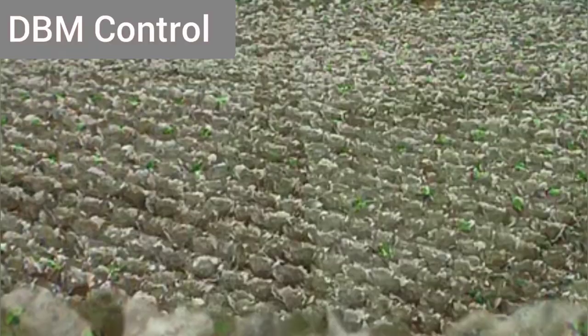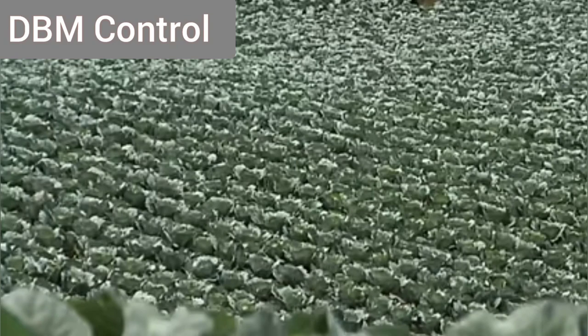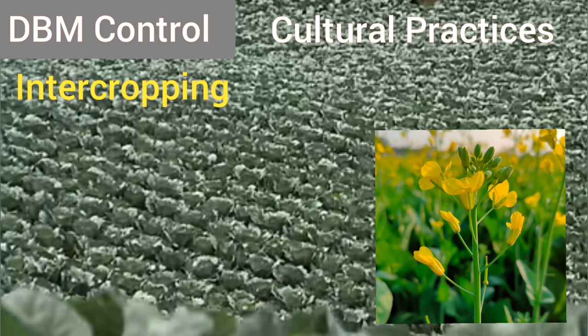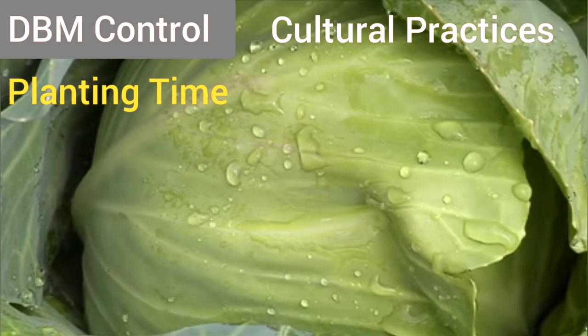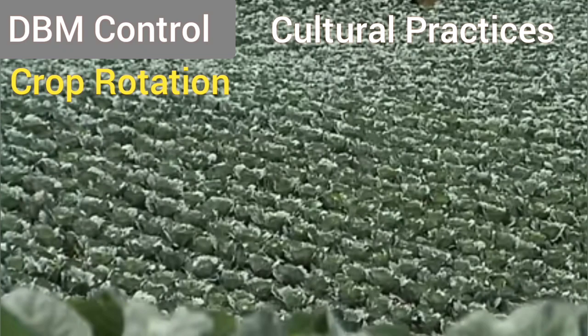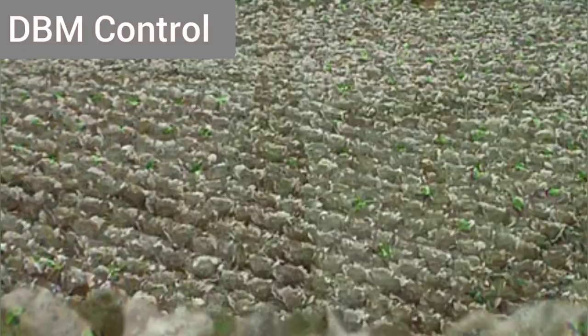For control, there are cultural practices. Inter-cropping with mustard crop and plant cabbage can be practiced. During the wet period of the season, DBM infestation is very low, so this period could be the right planting time. Third is crop rotation: crucifers can be rotated with melons, fruits, onions, and garlic, which results in a break in the food chain of DBM.